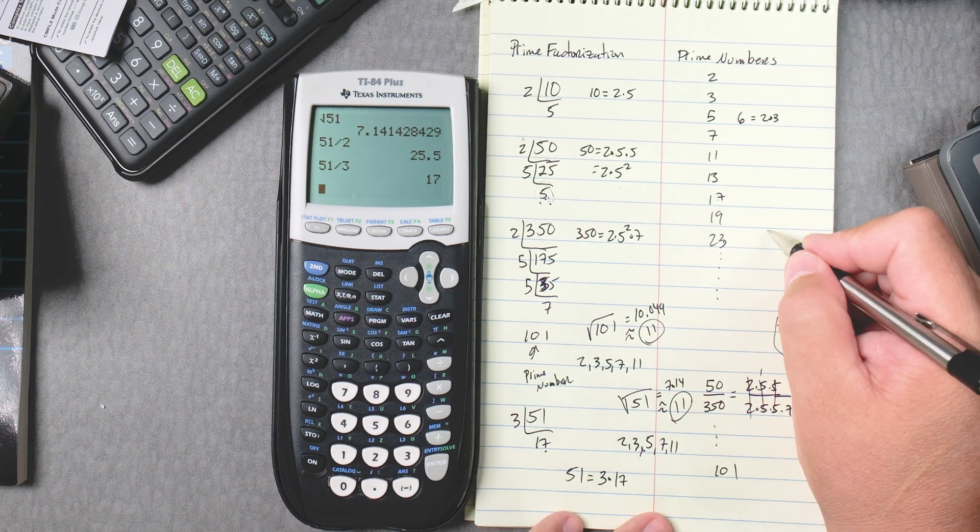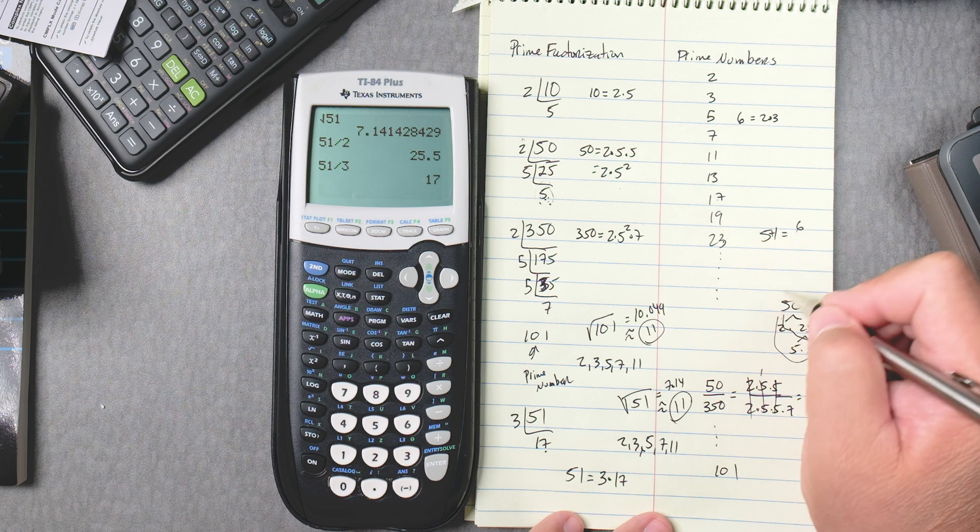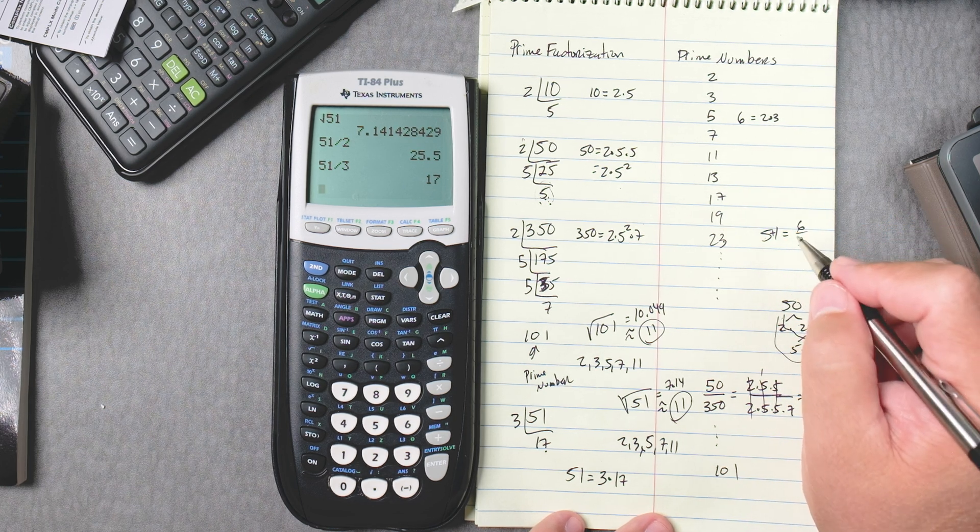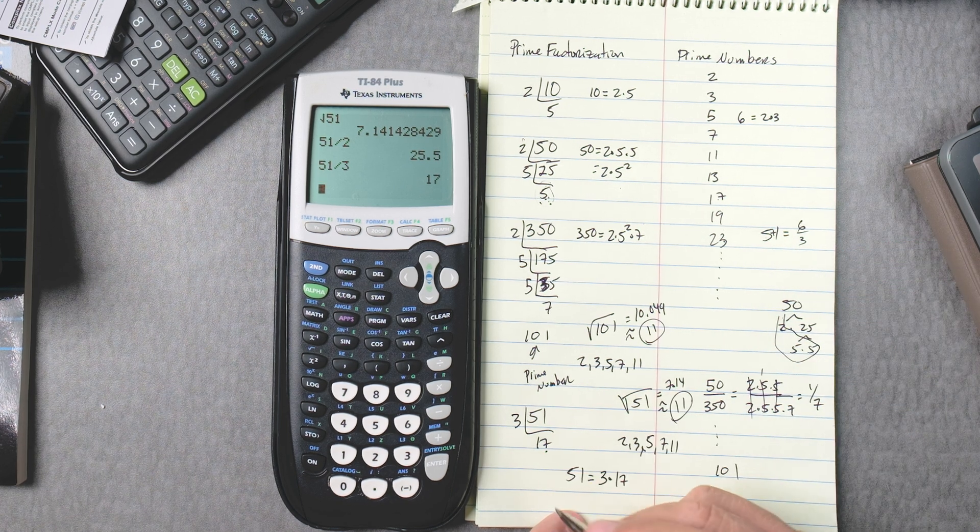By the way, 51, if you add the digits, 5 plus 1 gives you 6. 3 does go into 6. And if that's the case, then 3 goes into 51.